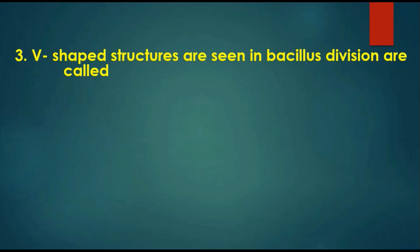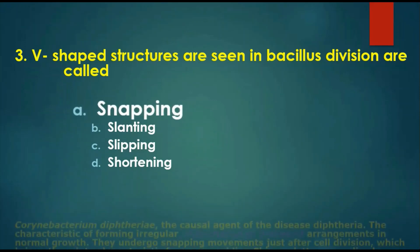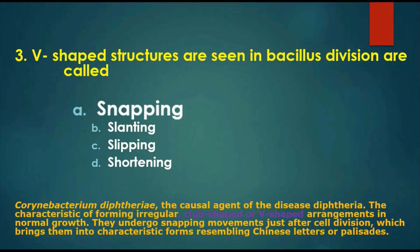Question 3: V-shaped structures are seen in Bacillus division — options are: A) snapping, B) slanting, C) slipping, D) shortening. The answer is snapping. V-shaped structures are found in Corynebacterium diphtheriae cultures. This is the causative agent of diphtheria and has characteristic irregular, club-shaped, or V-shaped arrangements in normal growth. Corynebacterium diphtheriae undergoes snapping movement just after cell division, bringing them into characteristic forms resembling Chinese letters.